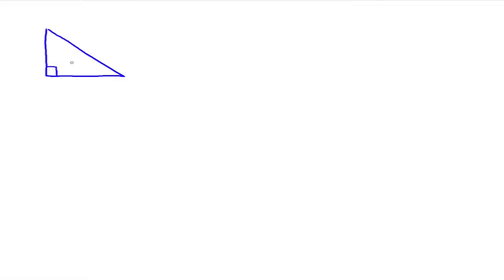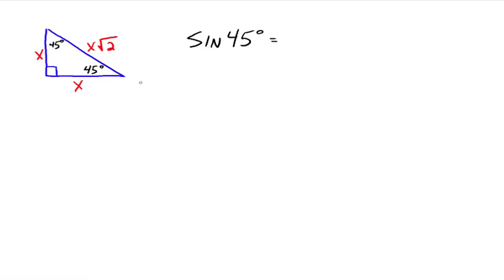Now we're going to have an isosceles right triangle, which means this leg and this leg are the same length. Since this is 90 degrees and we have an isosceles right triangle, these two angles here have to be the same — they are both 45 degrees. The sine of 45 degrees is opposite over hypotenuse, so x over x radical 2, which goes to 1 over the square root of 2, and when you rationalize that denominator, you get square root of 2 over 2. Sine of 45 degrees is the square root of 2 over 2.